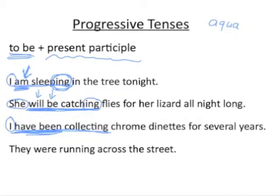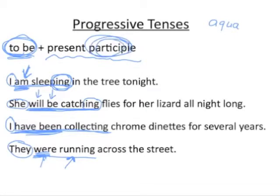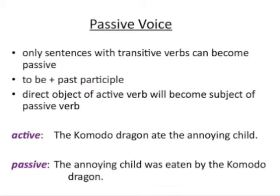'They were running across the street.' Our full verb is 'were running,' and 'they' is the subject. We have our 'to be' auxiliary and our present participle giving us a progressive tense. 'Were' is the past of 'to be,' so this is the past progressive. The progressive tense is really pretty simple because the present participle is always so regular — just remember you need some form of 'to be' and the present participle, the -ing form.